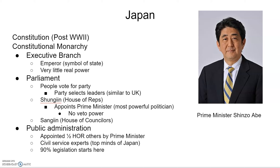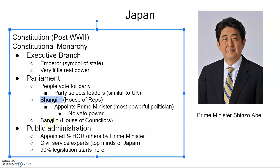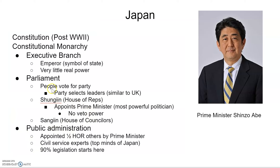The two main houses are the House of Representatives and the House of Counselors. The House of Reps appoints the prime minister, and the emperor has some impact on this. The prime minister is the most powerful politician; however, he does not have veto power like you would imagine a major executive branch individual, such as in the U.S.